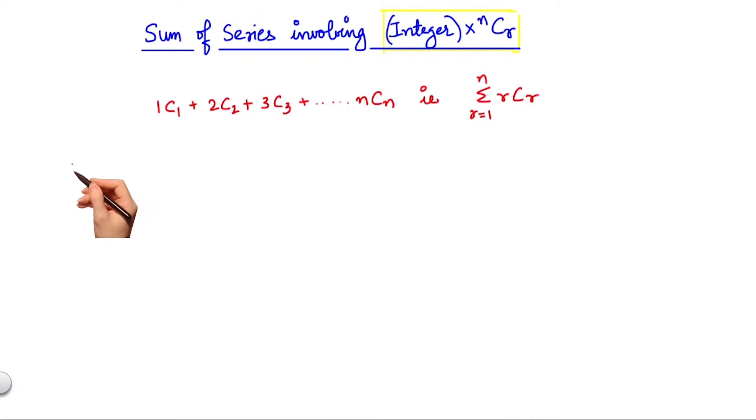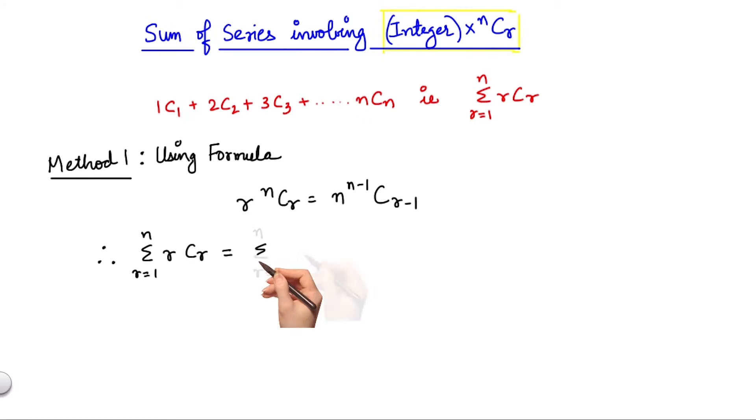Now there are two ways we can find out this sum. The first method comprises of using the formula r times ncr equals n times (n-1)c(r-1). Hence, using this formula, I can write summation rcr as summation n times (n-1)c(r-1).